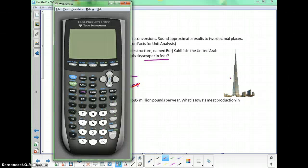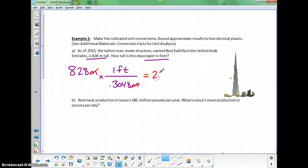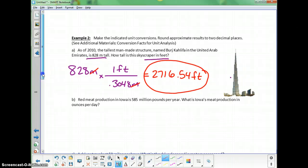So on my calculator here, I need 828 divided by 0.3048. The answer of 2716.54 is in feet. Let's look at the next example.